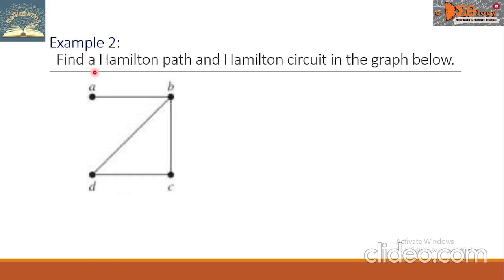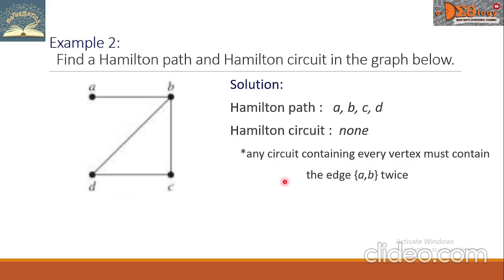Example 2. Find a Hamilton Path and Hamilton Circuit in the graph below. This is our graph. For the Hamilton Path, it starts at A going to B, C, and D. For Hamilton Circuit, there's none. Any circuit containing every vertex must contain the edge AB twice.